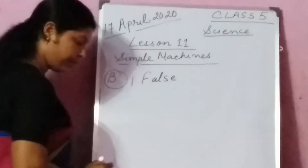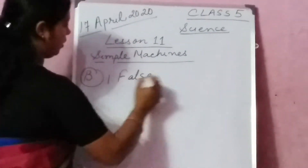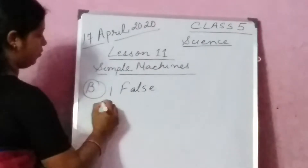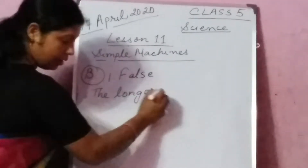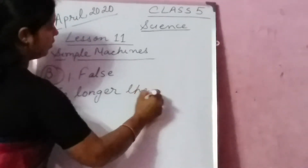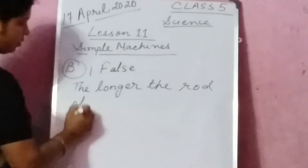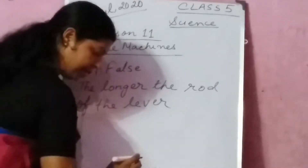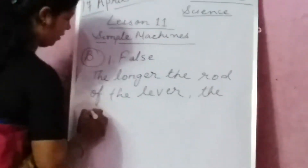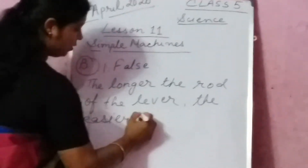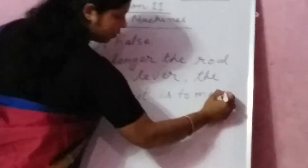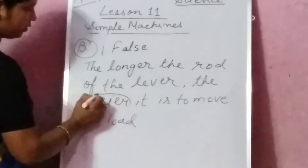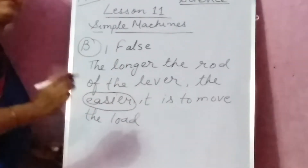Now we correct the statement. The longer the rod of the lever, the easier it is to move the load. We are changing 'harder' to 'easier' here.